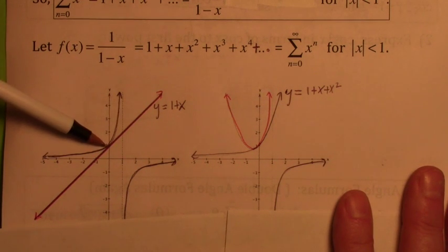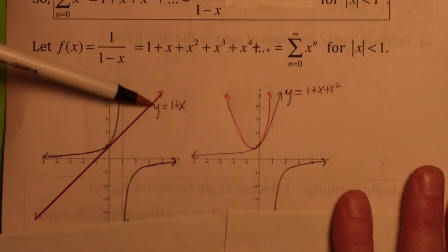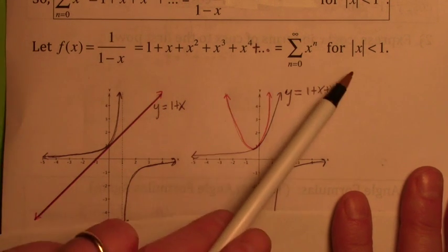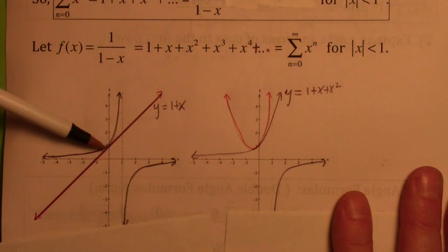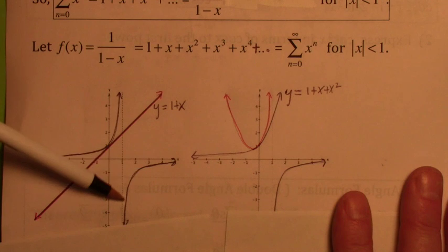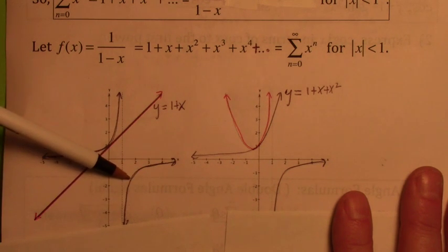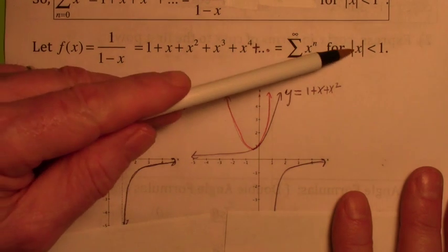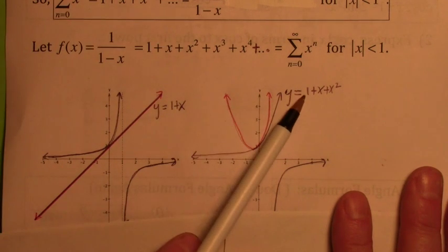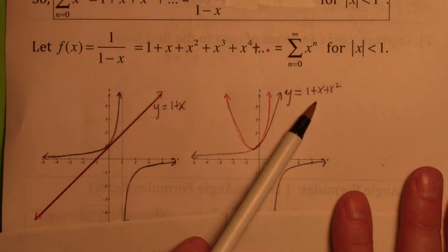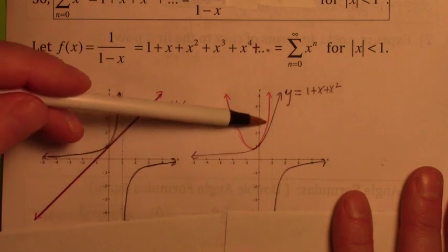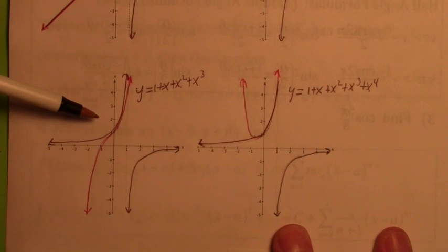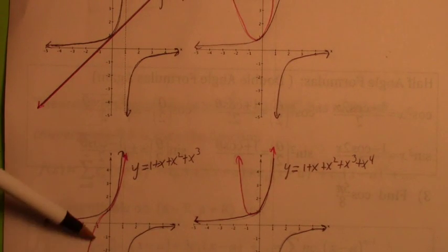This linear function is an approximation to the function value. Notice it's only good for a certain region — the absolute value has to be less than 1. If x gets beyond 1, it's a horrible approximation. So it's a pretty good estimator for the function as long as you're close to x equals 0. Now if you use the first three terms, this quadratic function is a better approximator for 1 over 1 minus x. The cubic function is even better — the first four terms give a third degree polynomial.